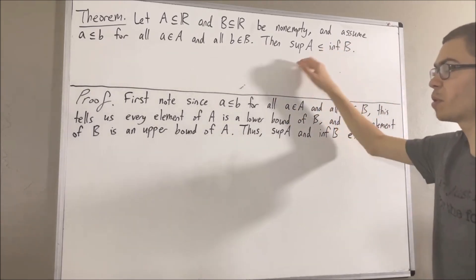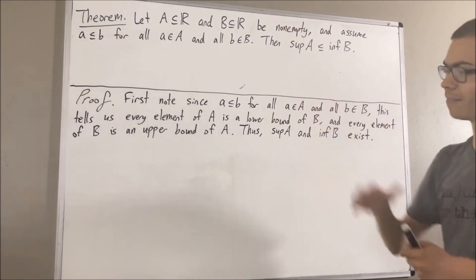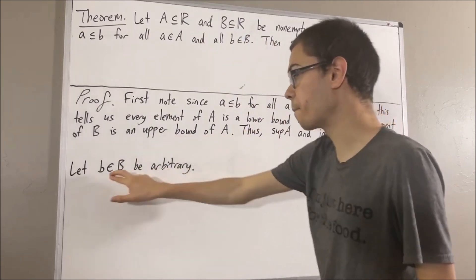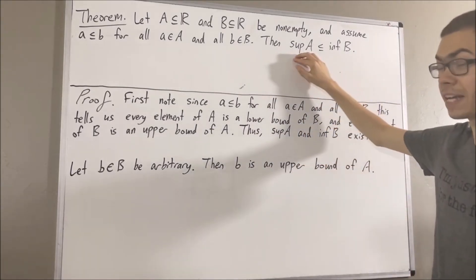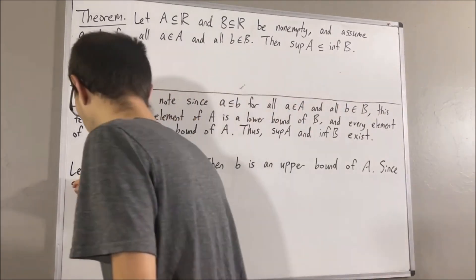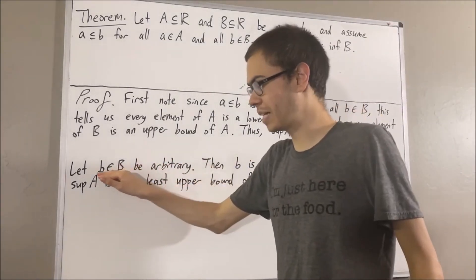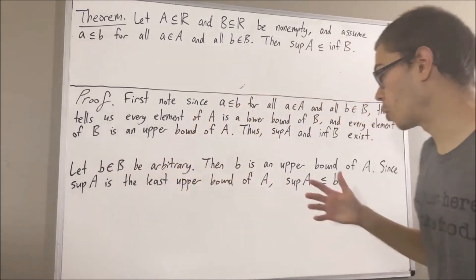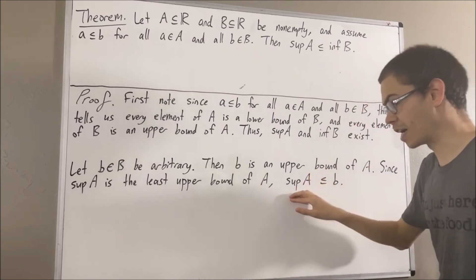So, let's show that the supremum of A is a lower bound of B. To show that, we're really trying to show that the supremum of A is less than or equal to every element of B. So, let's give ourselves an arbitrary element b in B. We know that every element of B is an upper bound of A, so b must be an upper bound of A. But since the supremum of A is the least upper bound of A, this tells us that the supremum of A must be less than or equal to b. Since b was arbitrary, we have shown that the supremum of A is less than or equal to every element of B, so the supremum of A is a lower bound of B.